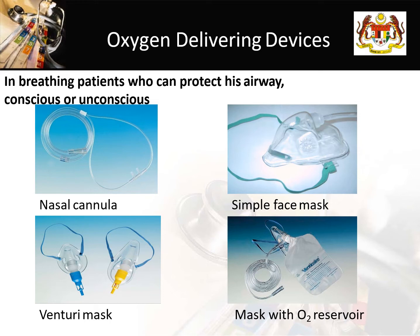One liter of oxygen can be estimated to increase oxygen delivery by approximately 4% on top of room air oxygen, which is 21%. For example, if you give three liters per minute through the nasal cannula, an estimated 12% of oxygen will be delivered on top of 21% room air oxygen — so the total will be around 33% oxygen delivered to the patient.